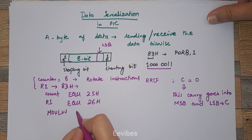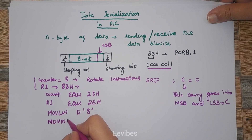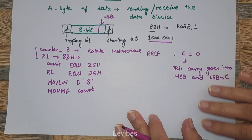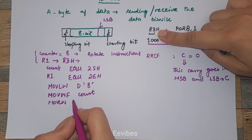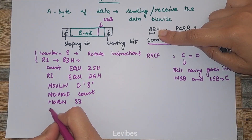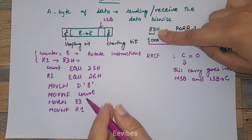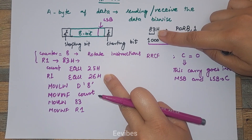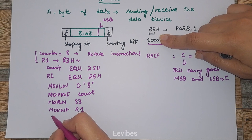The next step is to initialize the counter. I will write MOVLW 8 (decimal) and then MOVWF COUNT — this sets the counter value to 8. Next, MOVLW 83h initializes the working register with the hex value 83, and then MOVWF R1 stores this value into register R1. Now we have the counter and the value to transfer ready.